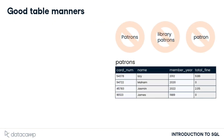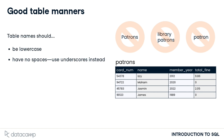Let's talk a little bit more about table naming. Table names should be lowercase and should not include spaces. We use underscores in place of spaces. Ideally, a table name would refer to a collective group, like inventory, but it's also okay for the table to have a plural name, such as products.